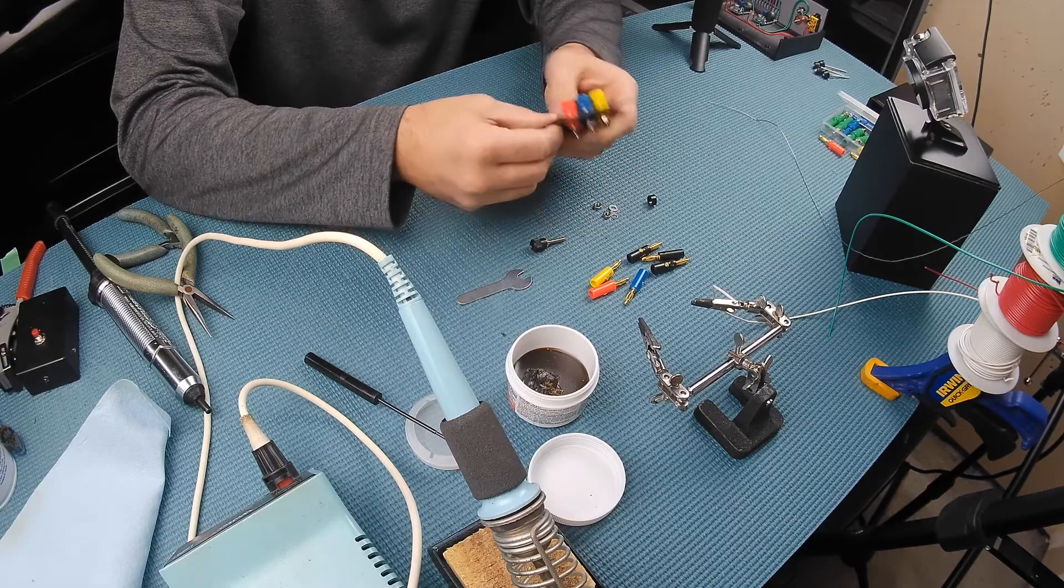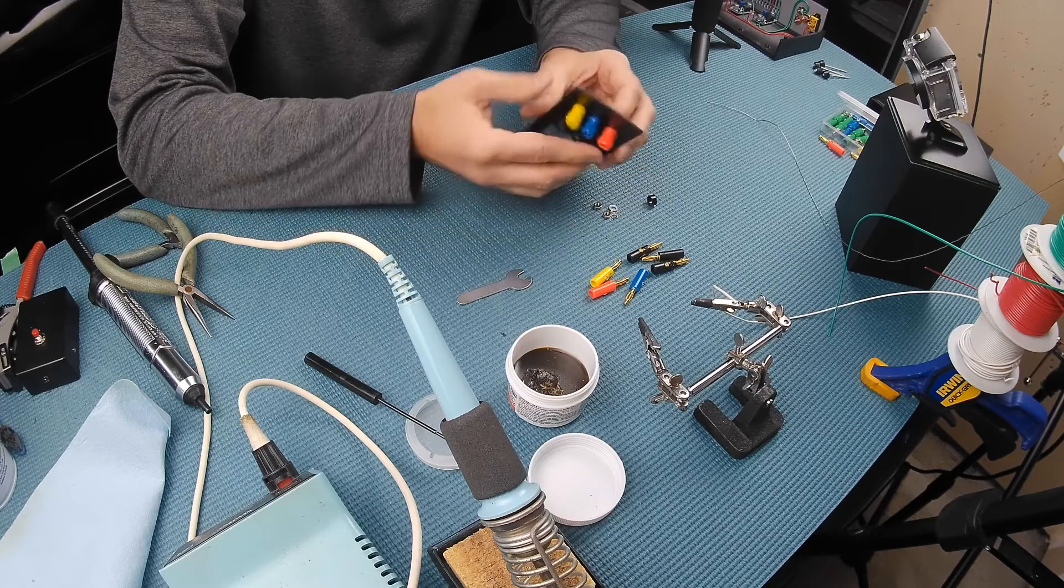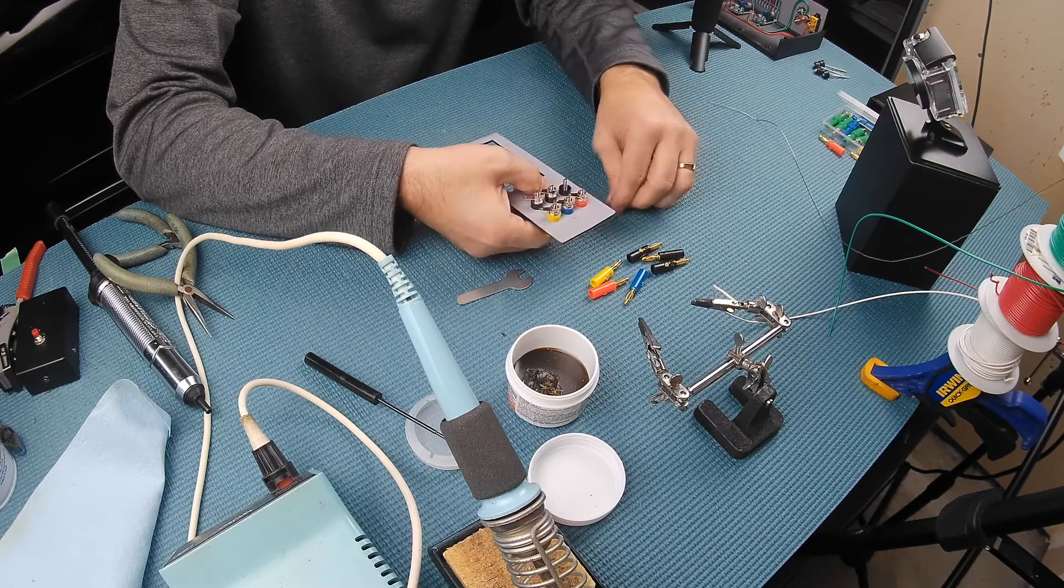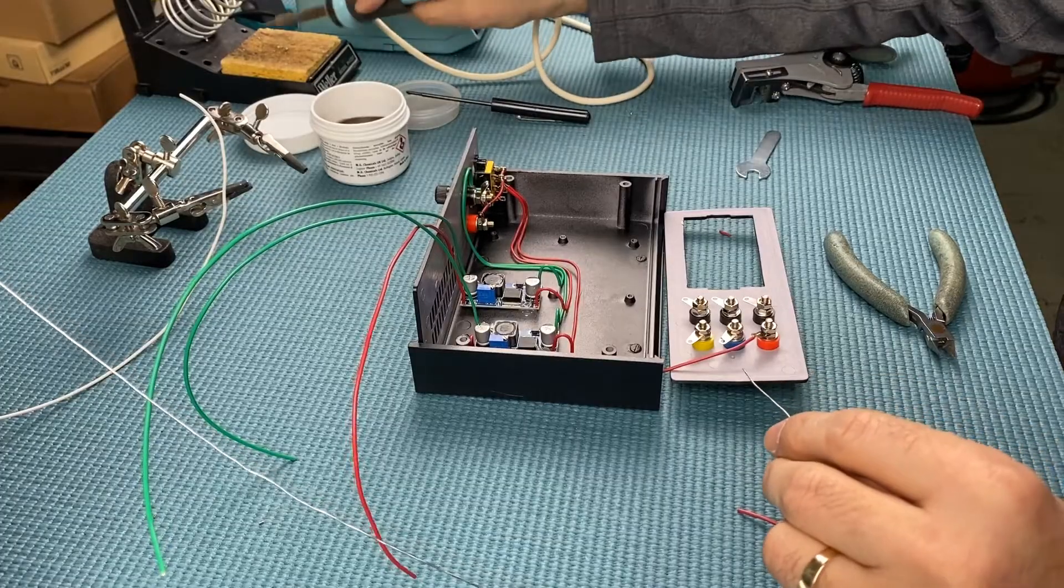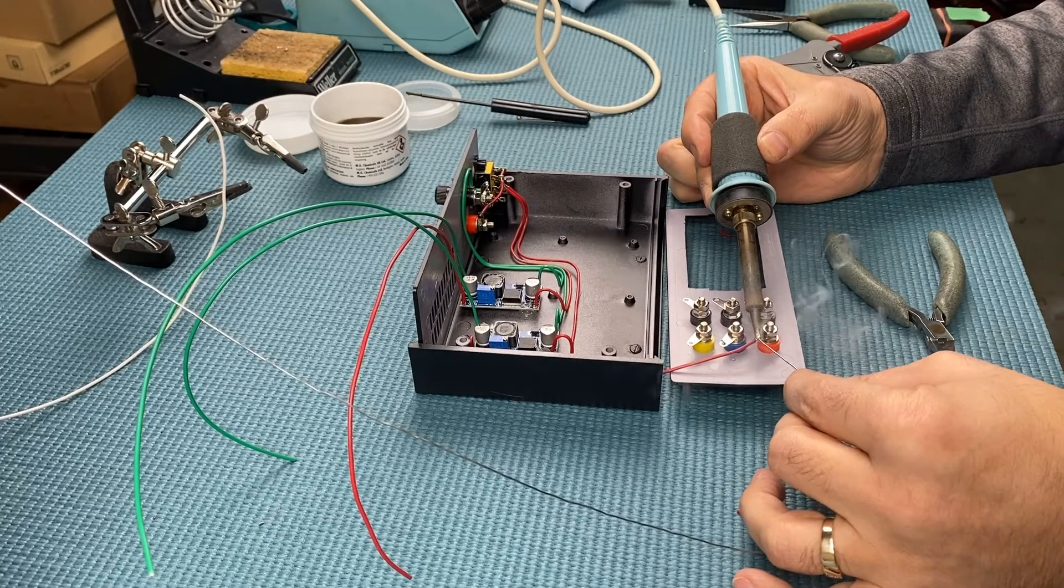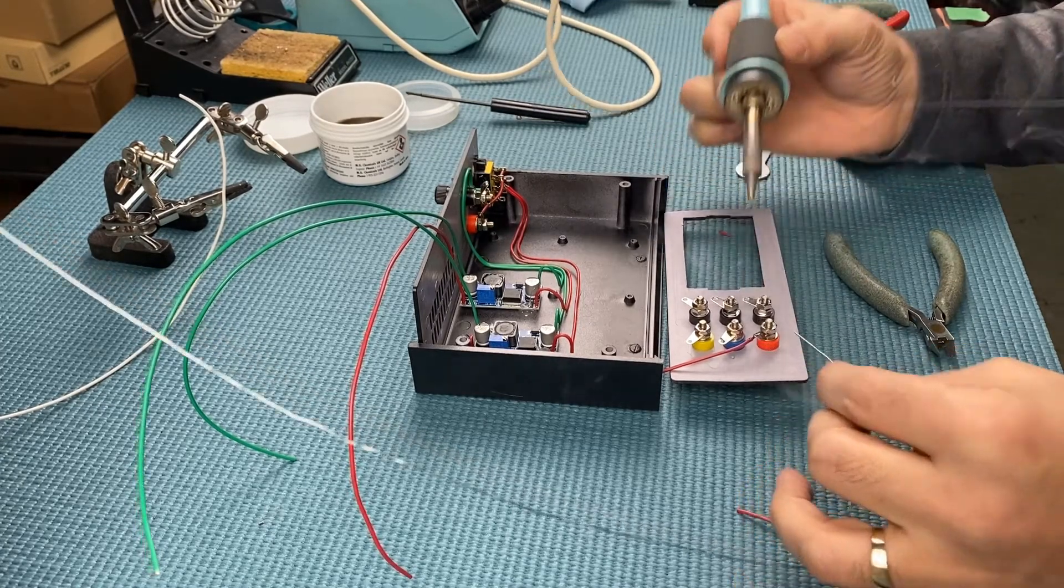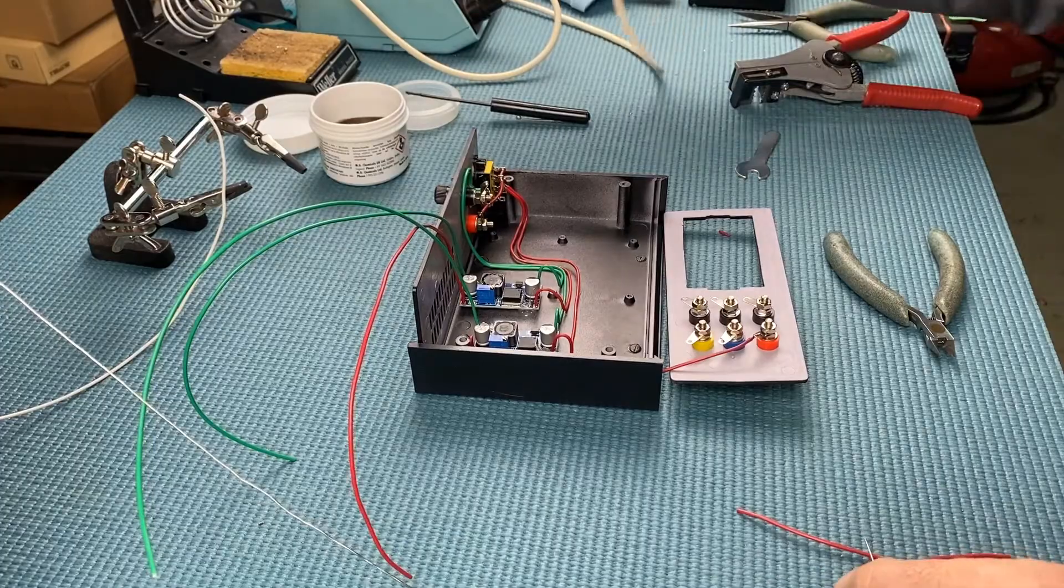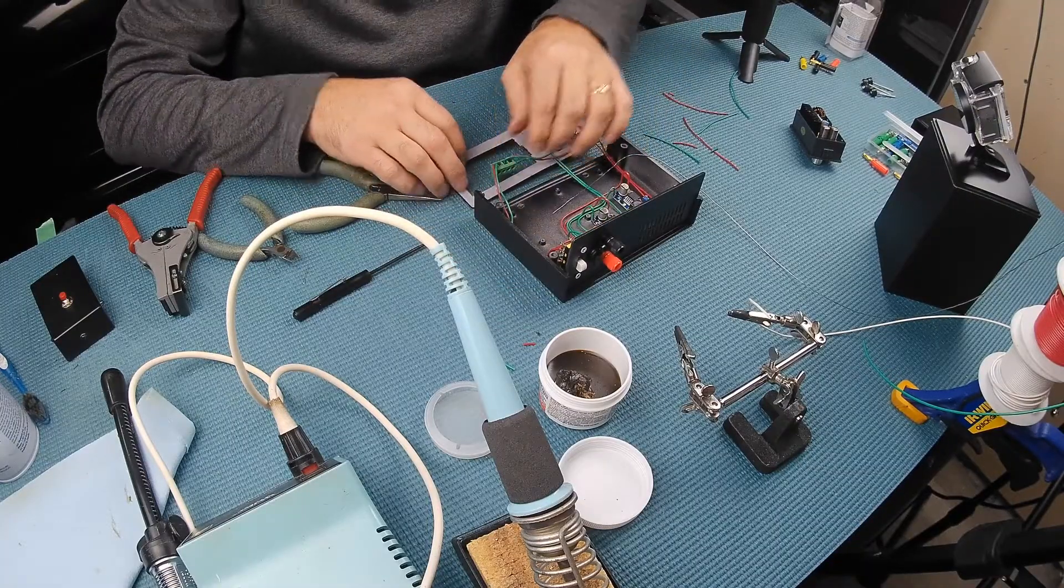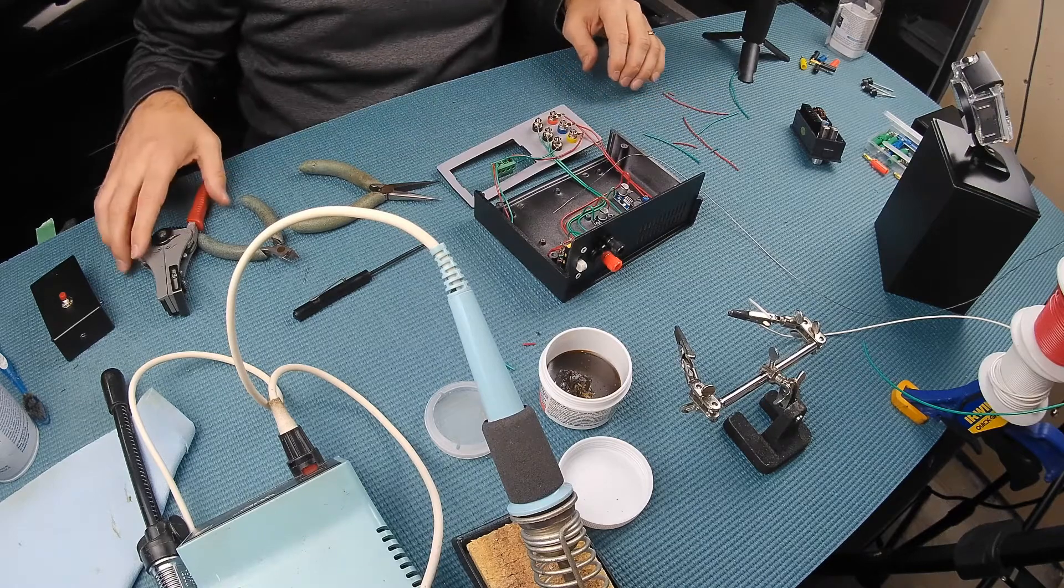I'll mount the banana terminals and wire the outputs of the buck converters to them. The great thing about these Phoenix connectors is that I don't have to mount the module until the wiring is complete.